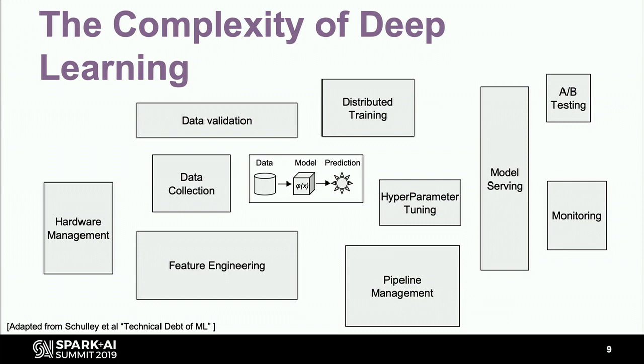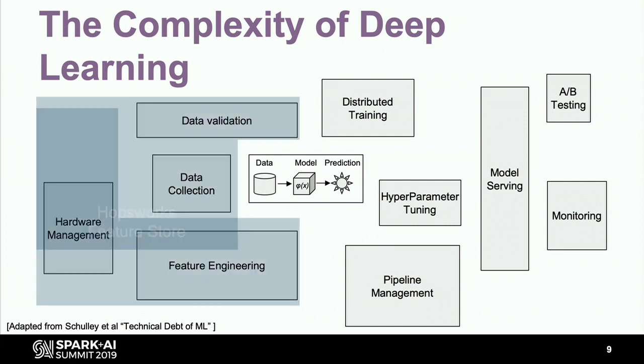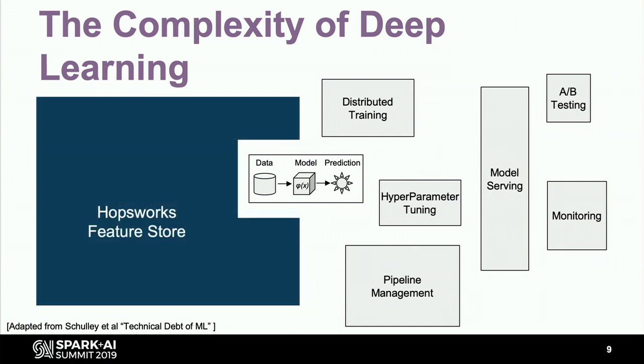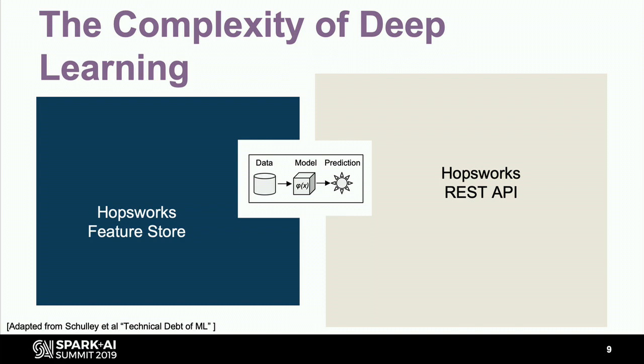The platform is about making the whole end-to-end cycle of machine learning and deep learning easier to use. If you're a data scientist, you've probably seen some variant of this diagram — the little box in the middle, training models, is really just a small part of building end-to-end machine learning applications. We have a feature store to hide the complexity of feature engineering, and APIs for distributed training and hyperparameter tuning. We're going to talk about one of those today, called Maggy. There's also a talk about the feature store tomorrow.